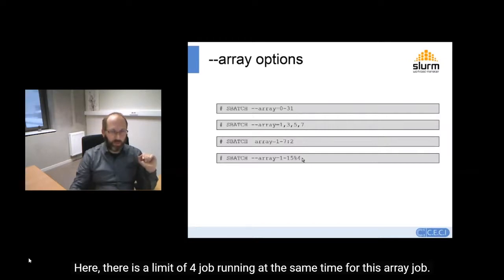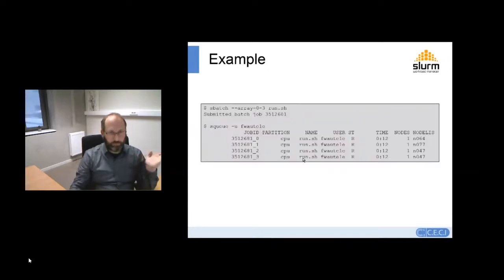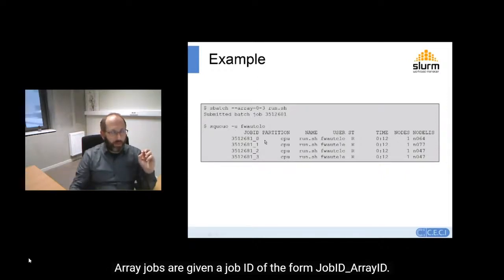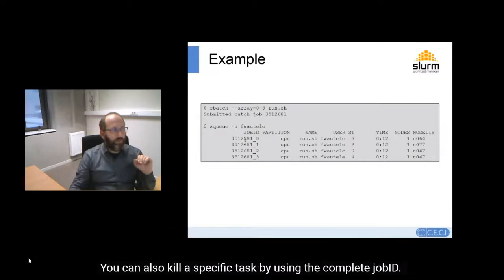Here is an example of an array job with four tasks. Array jobs are given a job ID in the form JobID_ArrayID. You can cancel an entire array job or specific tasks using the scancel command by specifying the complete job ID.